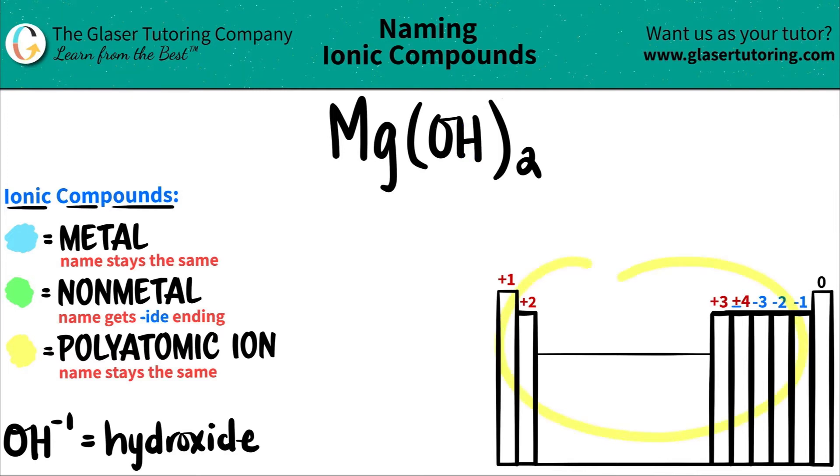Polyatomic ions are never on the periodic table. Your teacher or professor might give you those, but chances are you have to memorize them. So I wrote down the polyatomic ion we're using here. OH, whenever you see OH together, it's a polyatomic ion. OH always has a negative one charge. It gains one electron and it's always called hydroxide.